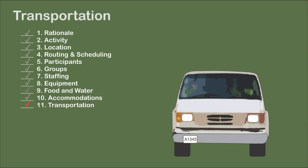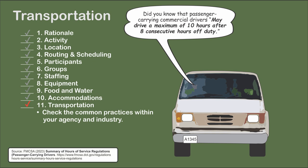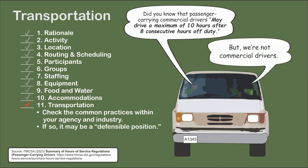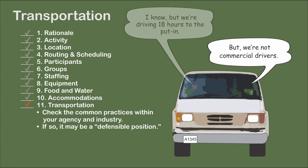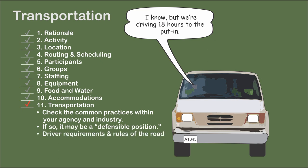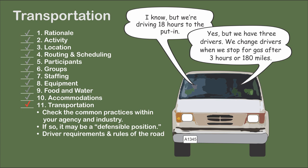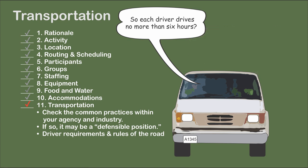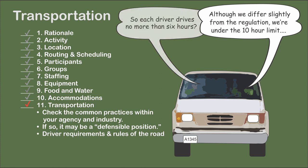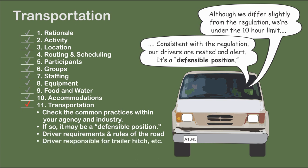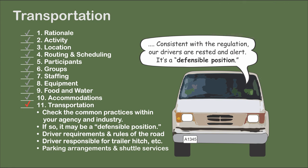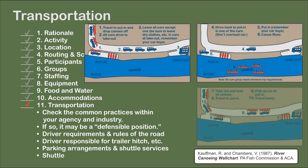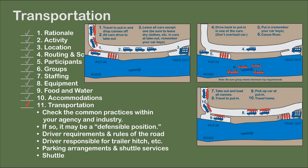Traveling to and from the outing is usually considered the most dangerous portion of the trip. Check the common practices within your agency and other agencies — this provides you with a defensible position. Adhere to driving requirements including driver's license, insurance, driving record, and completion of online van training courses if appropriate. Follow the rules of the road including driving time, brakes, seatbelts, and speed limits. Make sure vehicles have proper safety equipment including spare tire, flares, and proper maintenance. The driver is responsible for inspecting the trailer hitch, trailer, and roof racks. Don't overload the vehicle or trailer. At the destination, consider parking arrangements and, if needed, shuttle your vehicles.